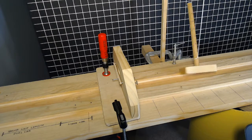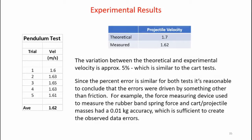We can take a look at the five data sets and see what kind of average velocity we got. Here are the results from the pendulum test — the velocities measured by the motion detector give an average of 1.62 meters per second. This value is different from the cart because I pulled the rubber band back to only six centimeters for this test, and the system mass was different as well. The theoretical calculation gave a velocity of 1.7 meters per second, but the measured velocity was 1.62 — representing a five percent error, the same as the cart tests. Since the percent error for both experiments was on the order of five percent, that tells me friction was not having a big effect. Looking elsewhere, the resolution of my force measuring device and motion detector could account for that five percent error.